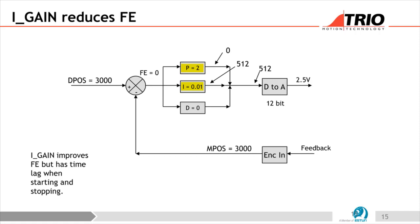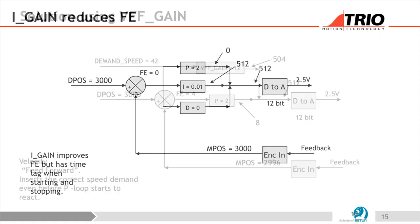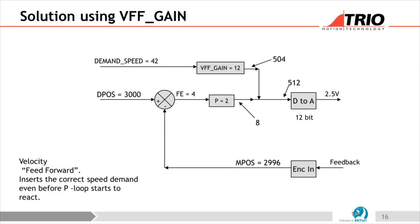The downside is when you stop suddenly, the integrator takes a few hundred milliseconds to ramp down, causing overshoot. D gain helps damp this — if there's a sudden change in following error during deceleration, D gain outputs a large negative braking value to overcome the I gain. Tuning PID takes considerable care. However, 95% of systems don't use it — they just use P gain plus something called VFF gain, velocity feed forward.